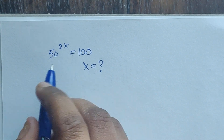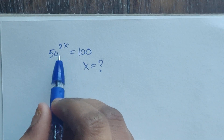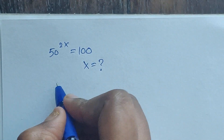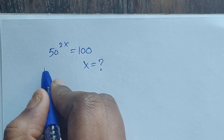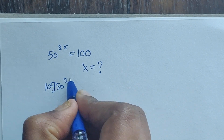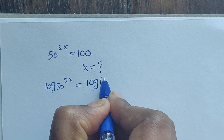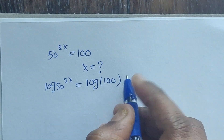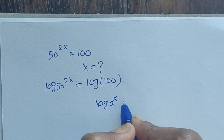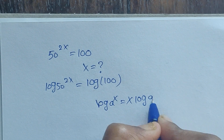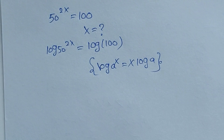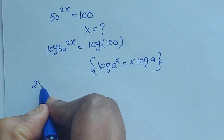Hello everyone, welcome back to our channel. Here we have one problem: 50 to the power of 2x equals 100. In this problem we have to find the x value. So first we will apply log on both sides: log of 50 to the power of 2x equals log 100. Now, log a to the power of x equals x log a — this is the formula I am going to apply here.